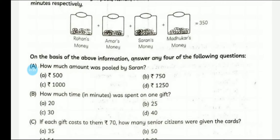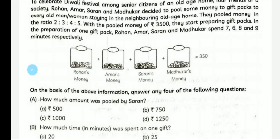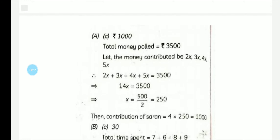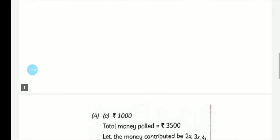The first question is: how much amount was pooled by Saran? The ratio is given and the total amount is Rs. 3500. We convert the ratio into 2x, 3x, 4x, and 5x, then add and equate to 3500. The value of x comes out to 250. Since Saran's ratio was 4x, 4 × 250 = Rs. 1000.